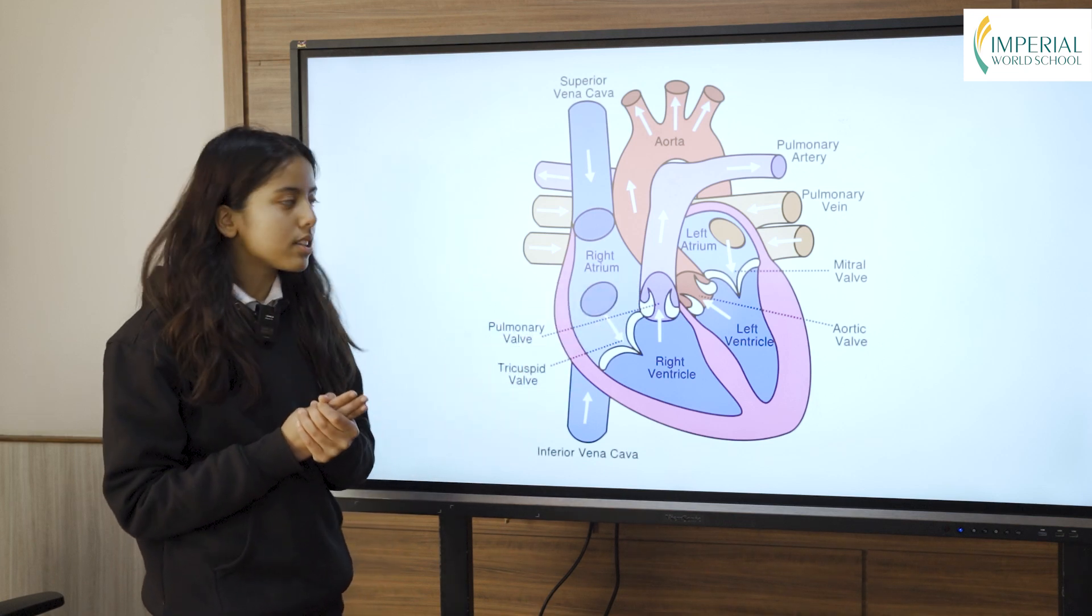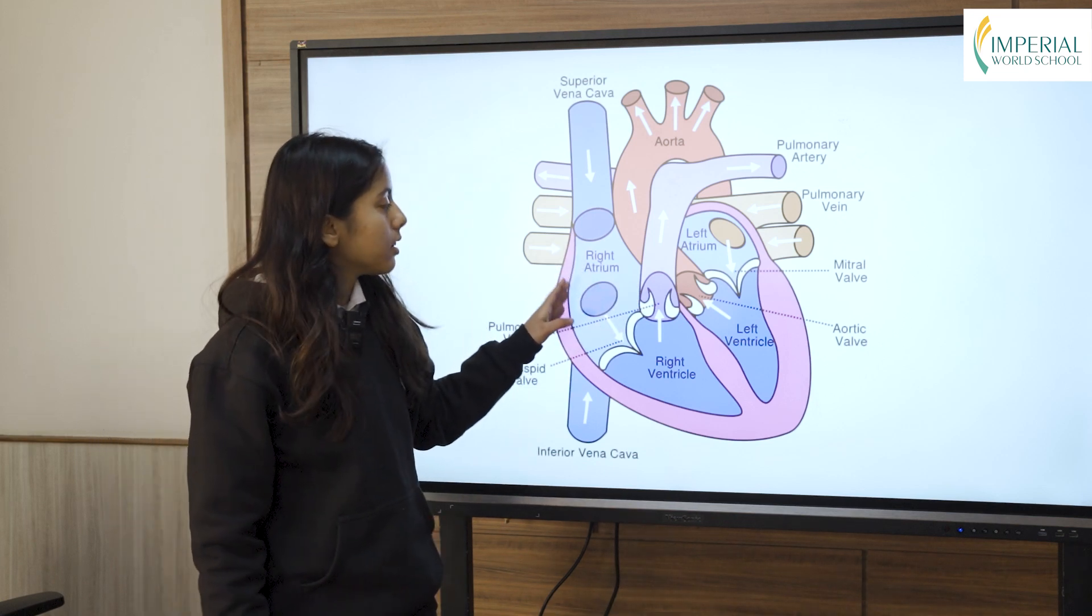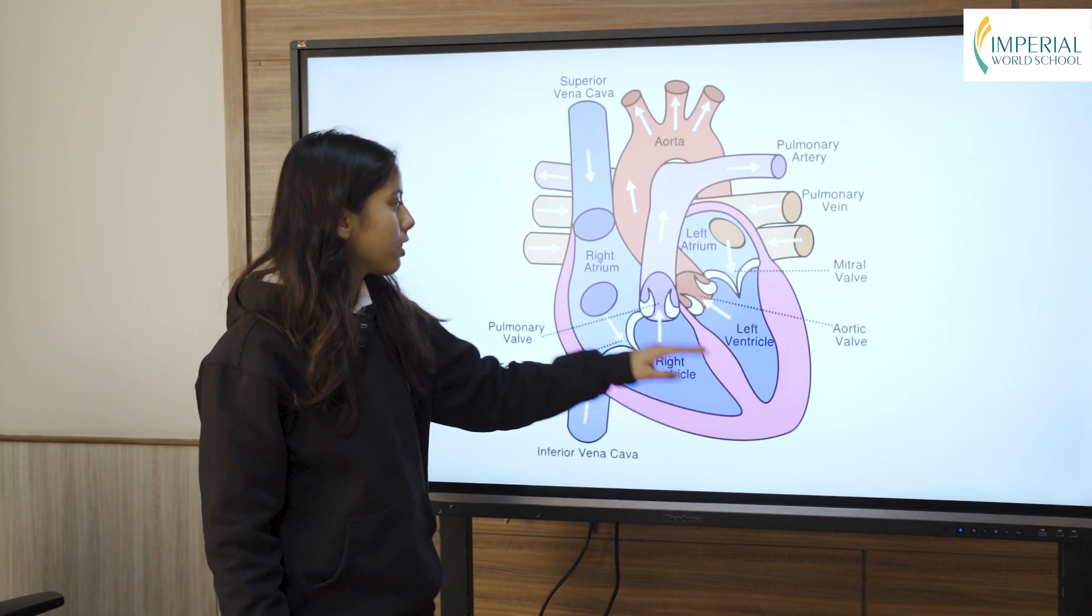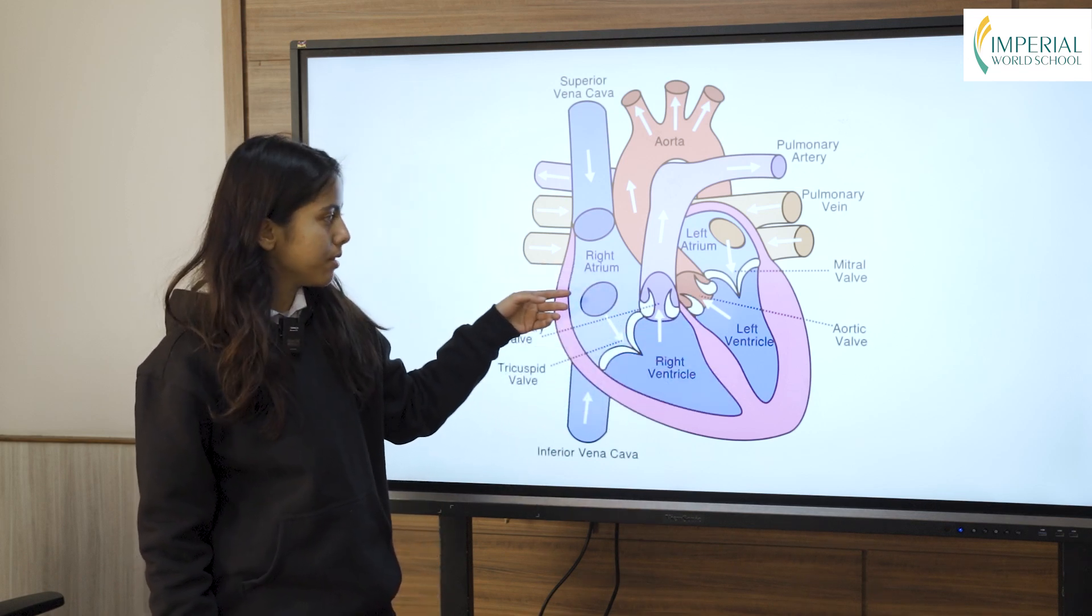The heart has four chambers: right auricle, left auricle, right ventricle, and left ventricle. Auricles are also called atriums.